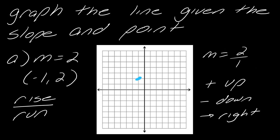I'll do that one more time: up two and over one. Notice now I have three points counted out from the slope, and I can connect those three points to make the line.